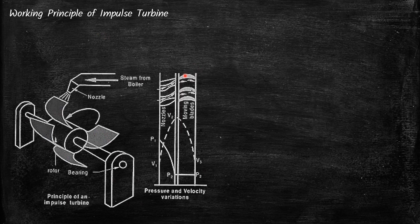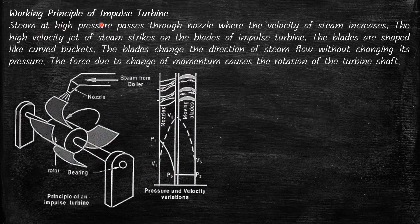Now we will discuss the working principle of an impulse turbine. Steam at high pressure passes through the nozzle where the velocity of steam increases. The high velocity jet of steam strikes the blades of the impulse turbine. The blades are shaped like curved buckets and change the direction of steam flow without changing its pressure. The force due to change of momentum causes the rotation of the turbine shaft. This is how a steam impulse turbine works.